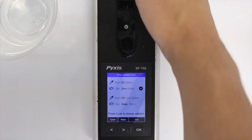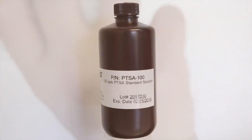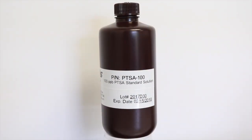Re-open the shield and remove the DI water. Then insert the Pyxis standard 100 ppb PTSA solution.